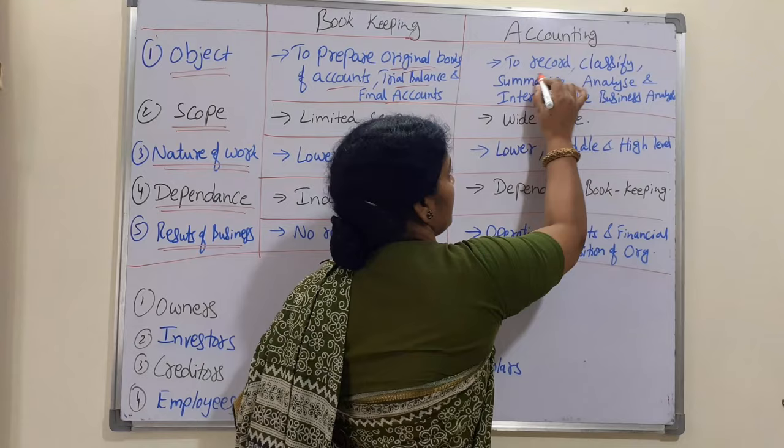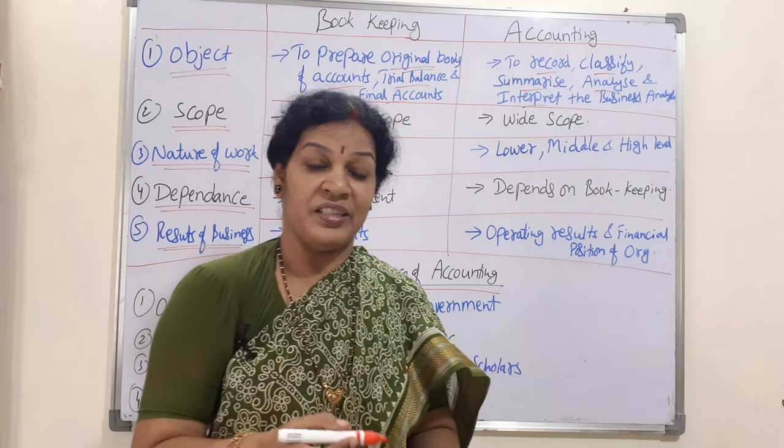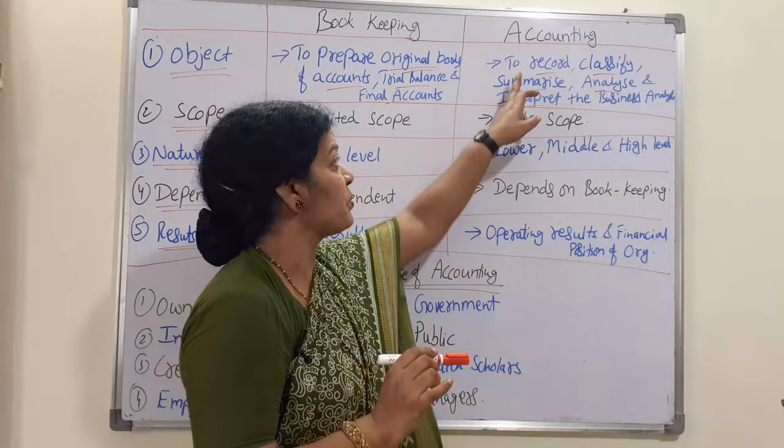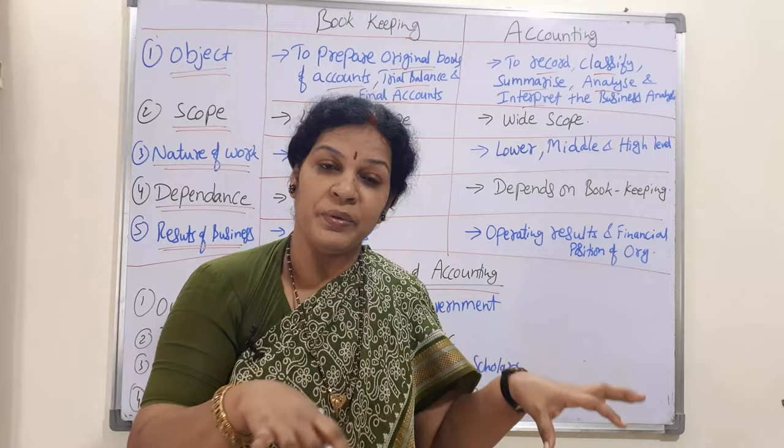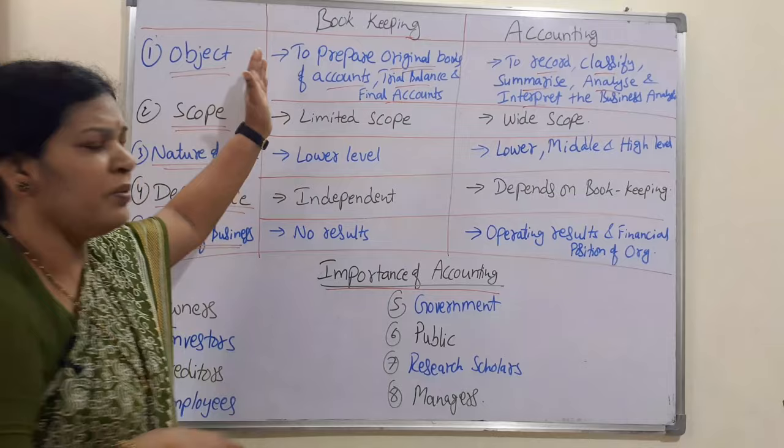Whereas the object of accounting is to record, classify, summarize, analyze, and interpret the business — a very vast object. The objects include recording the transactions, classifying as per requirement, summarizing, analyzing, and interpreting the total entire business. That is why the object of accounting is very vast compared to bookkeeping.